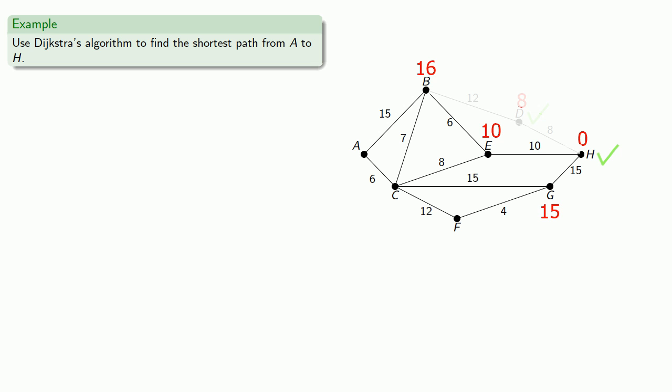Now the other way we could get to E is by starting at C. So the path from C to E to H has length 8 plus 10, which is 18. So we mark it. Since we've considered all edges to E, we mark E as visited.